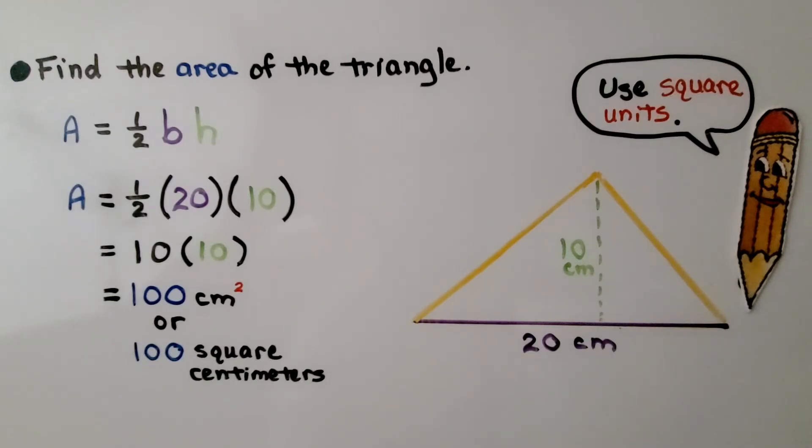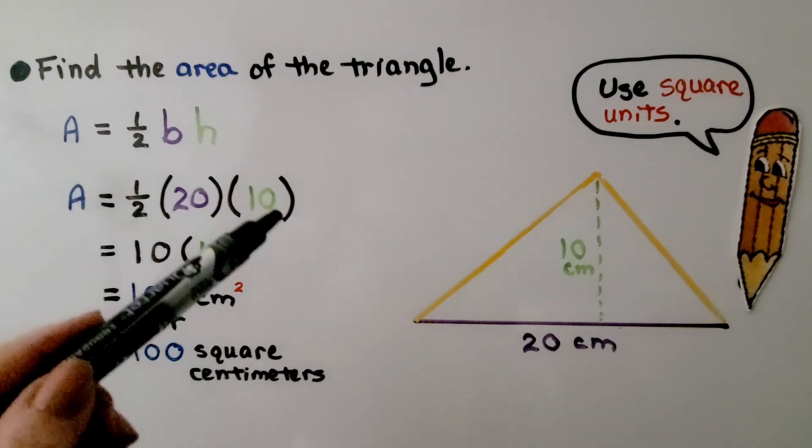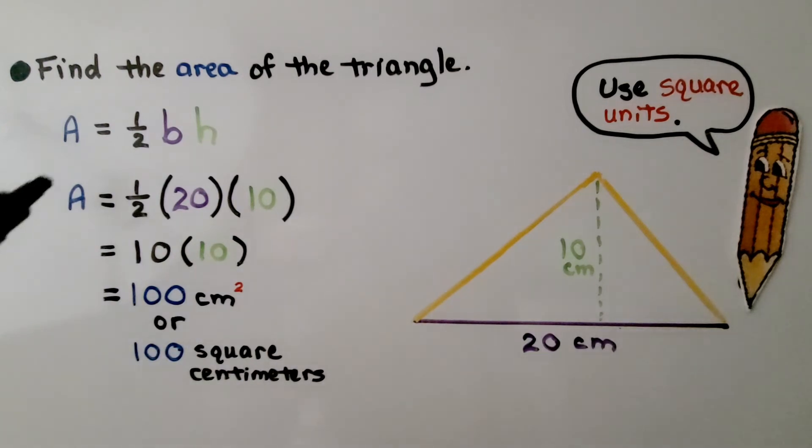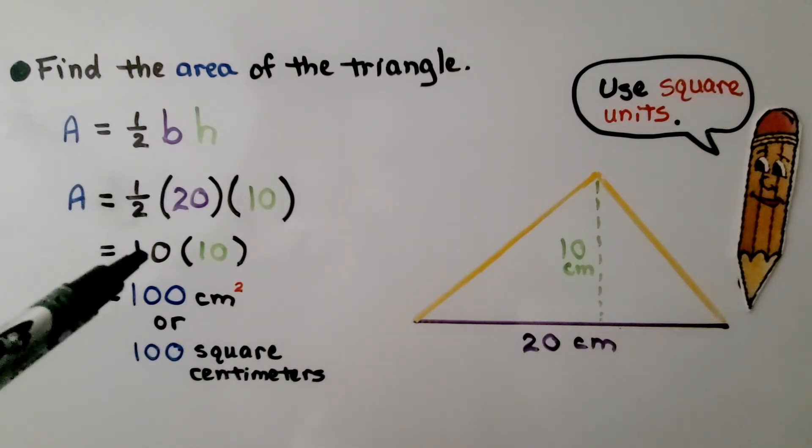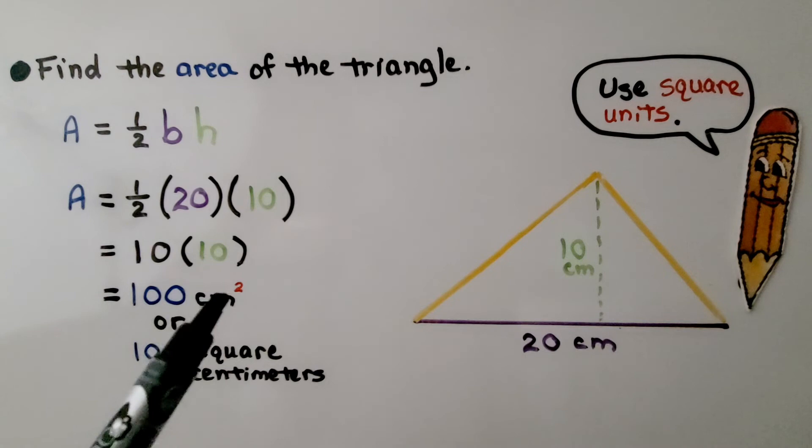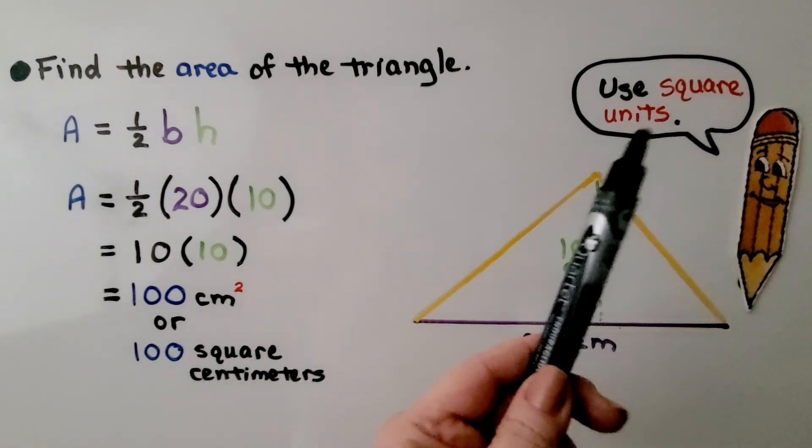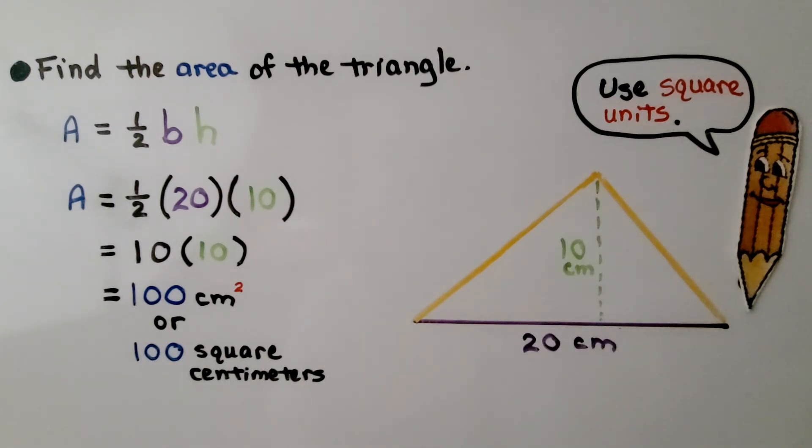We need to find the area of this triangle. We can see the base is 20 centimeters and the height is 10 centimeters. We put 20 centimeters for the base and 10 for the height and we multiply. Half times 20, half of 20 is 10. Now we multiply it to that 10, we have 100 centimeters squared. We can write it with a cm with a little 2 exponent or we can write the words square centimeters. But remember to use square units when working with area.